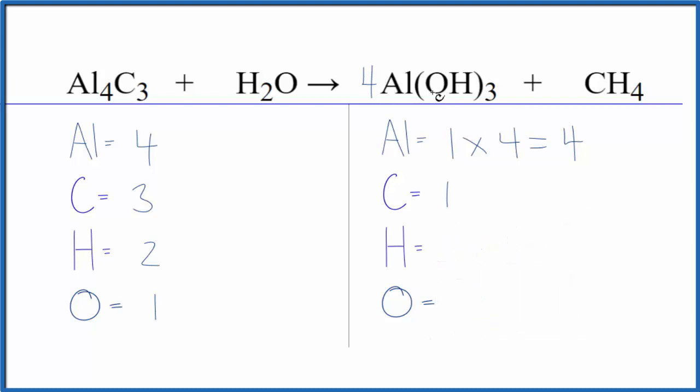So now, for hydrogen, we have three times the one, that's three, times four. Three times four is 12, plus the four with the methane. Oxygen, we have three times one, three times the four, 12 oxygen atoms.